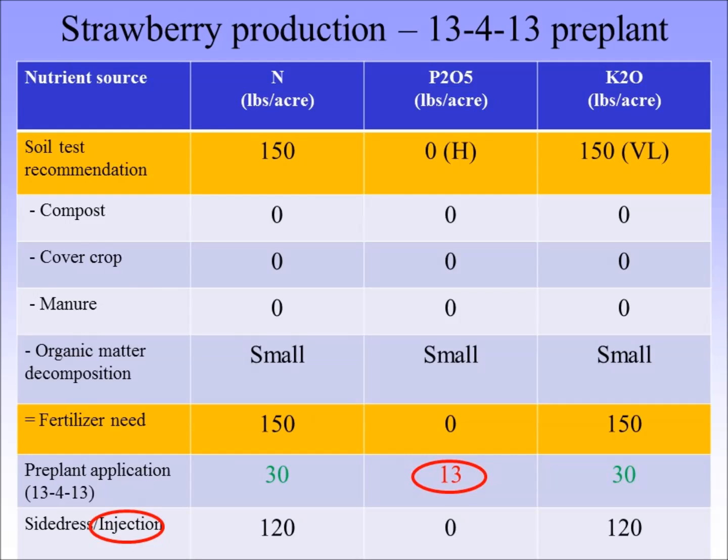When you plug that into your table, you get your 30 for N — which is what you wanted — and your 30 on the right side for K2O — also what you wanted — but you ended up applying 13 pounds of P2O5 that you didn't want. That was just to show you that when you don't get exactly the fertilizer you want, it does contribute in a way you didn't intend into your overall computation.